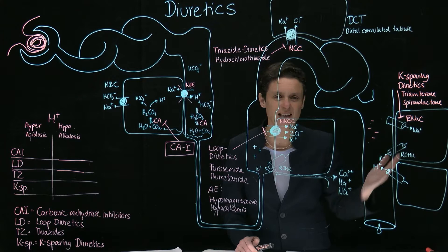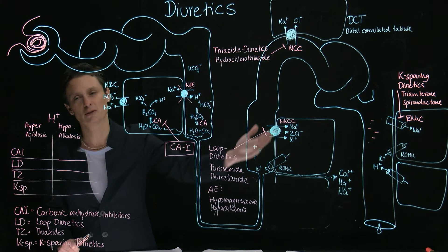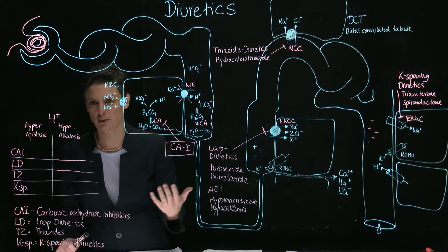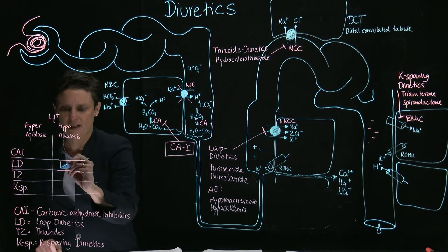Any diuretic that acts proximal to ENaC means we're not only losing potassium but also losing protons. As a consequence, when we lose protons, we're going to develop a metabolic alkalosis. This is found for thiazides and loops — so thiazides and loops have metabolic alkalosis as an adverse effect.